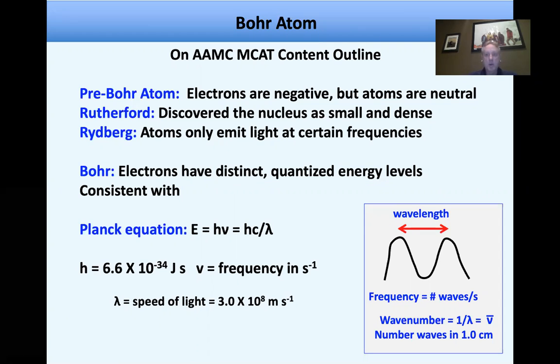So we have to think about atoms. People have known they've been around for a long time. But the pre-Bohr atom was, the knowledge was that electrons were negative. J.J. Thompson had discovered electrons in the 1890s, but they knew atoms were neutral. And so this created a conundrum, and a bunch of models got put forth, but none of which were very satisfying. But then around 1900, Rutherford discovered the nucleus, and he discovered it's a very small and dense aspect of the atom.